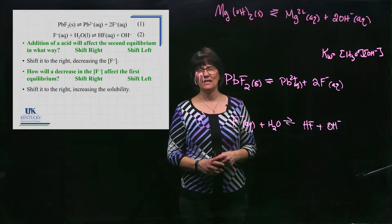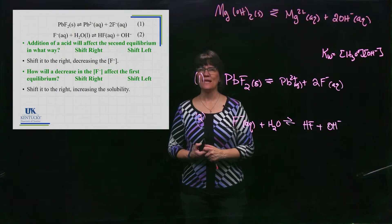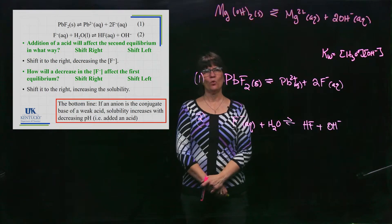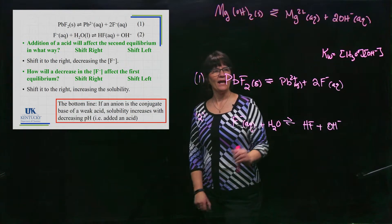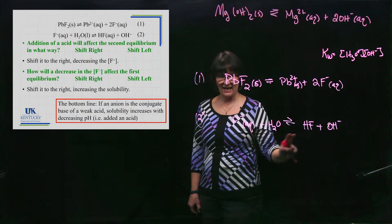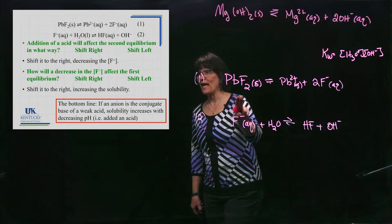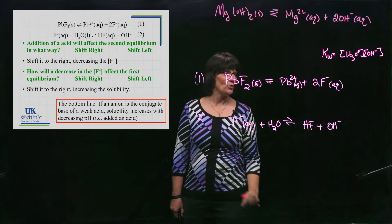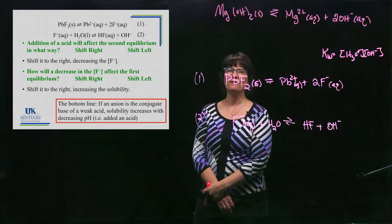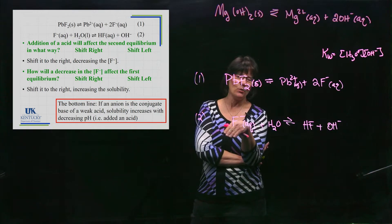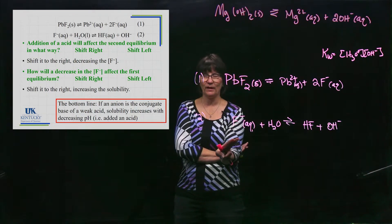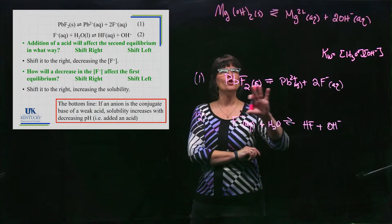The bottom line - in this red box - is very important. If your anion is the conjugate base of a weak acid, its solubility will always increase when you add an acid, when you lower the pH. Not all salts are affected - lead chloride, for example, wouldn't be, because Cl⁻ is not the conjugate base of a weak acid and has no secondary equilibrium.